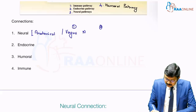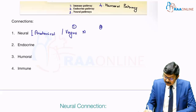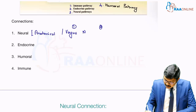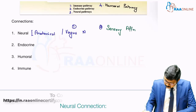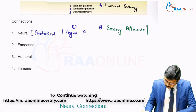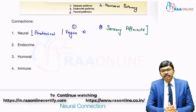So the first anatomical connection between gut and brain is the vagus nerve, and the second is mediated by sensory afference. Through these two networks, the neural pathway of the gut-brain axis is solidly established.